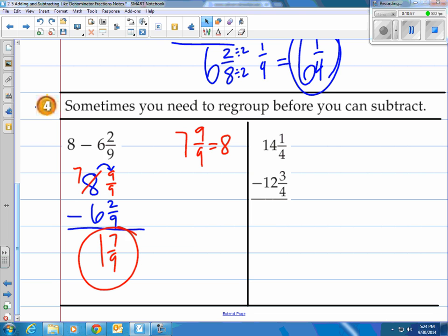14 and 1 fourths minus 12 and 3 fourths. Well, notice we don't have enough to actually subtract 1 fourths minus 3 fourths, so we have to borrow. Again, we're going to borrow from that 14. That becomes 13. And we're going to add on 4 fourths over here, which is 1. And when you add that 4 fourths, here's what you end up having. You have 13 and 5 fourths. You added on these, the 4 fourths, onto the 1 fourth.